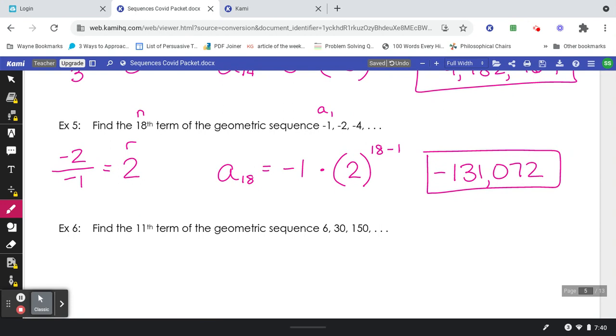Example number 6. I've got n is 11, a sub 1 is 6. 30, the second term divided by the first term would get me 5 for the r.